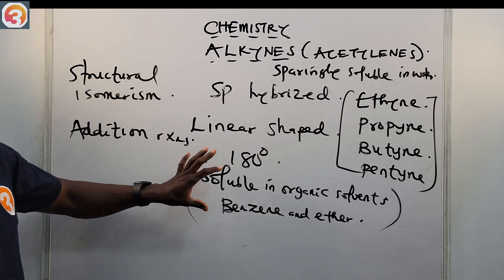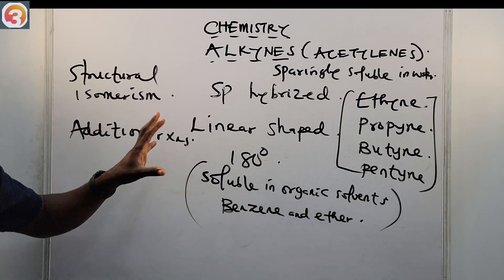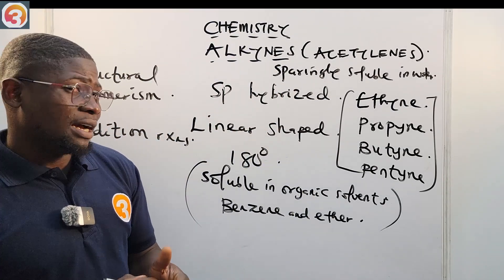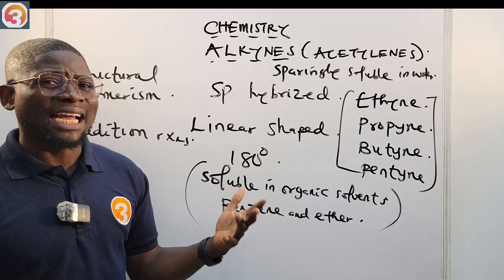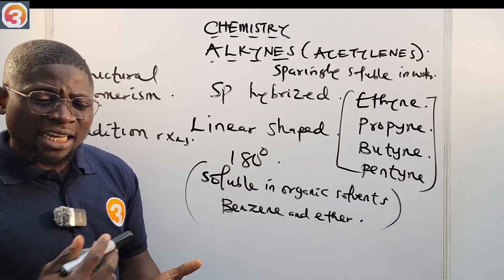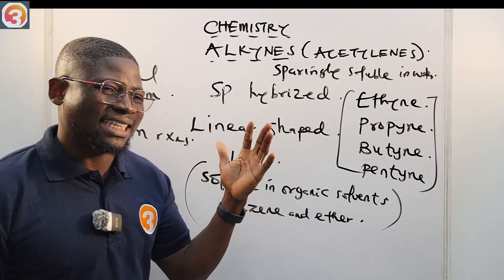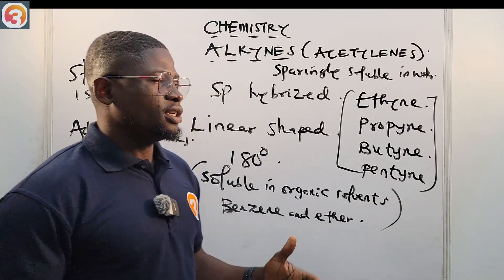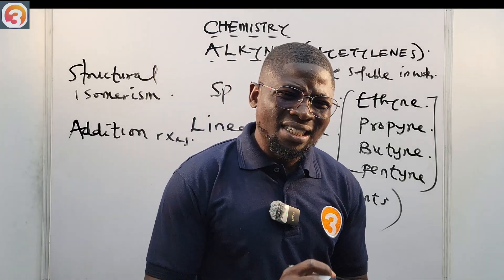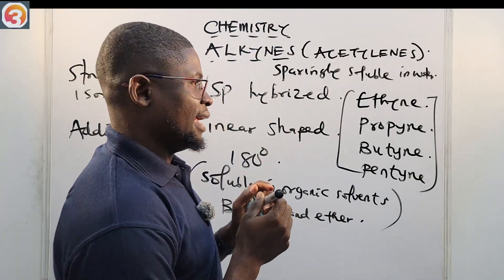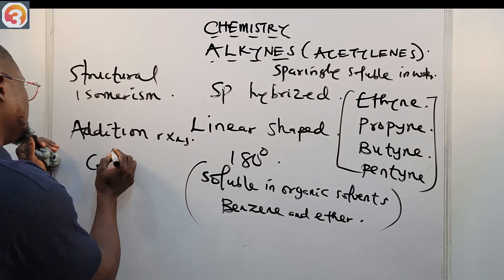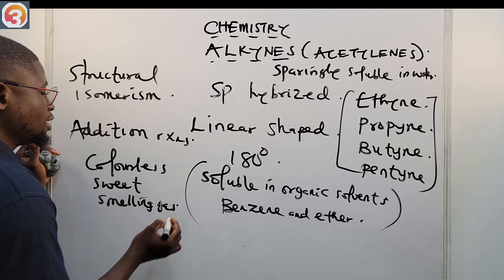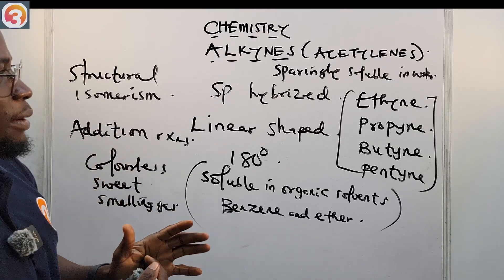Alkynes are more unsaturated than alkenes. In terms of reactivity: alkanes are least reactive because of how saturated they are with hydrogen atoms. Alkenes are more reactive than alkanes, and alkynes are more reactive than alkenes. Also, ethyne is a colorless, sweet-smelling gas that is slightly less dense than air.